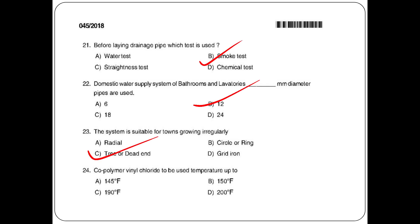The fourth question: co-polymer vinyl chloride (CPVC) is used up to what temperature? Options: 145, 150, 190, 200. The answer is option C: 190 degrees Fahrenheit.